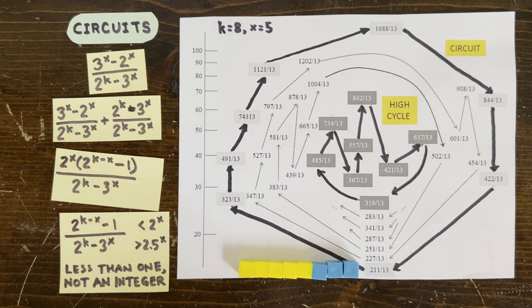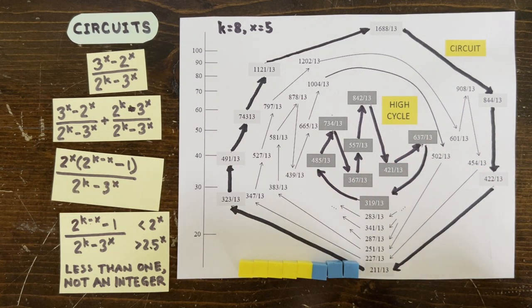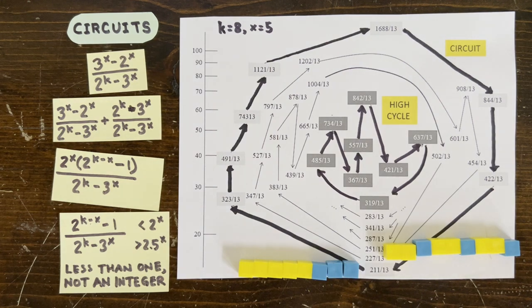Second, we looked at regularly shaped loops, like this one, consisting of a bunch of up-up-downs followed by a bunch of downs. And we proved that it likewise never contains integers, no matter how long.